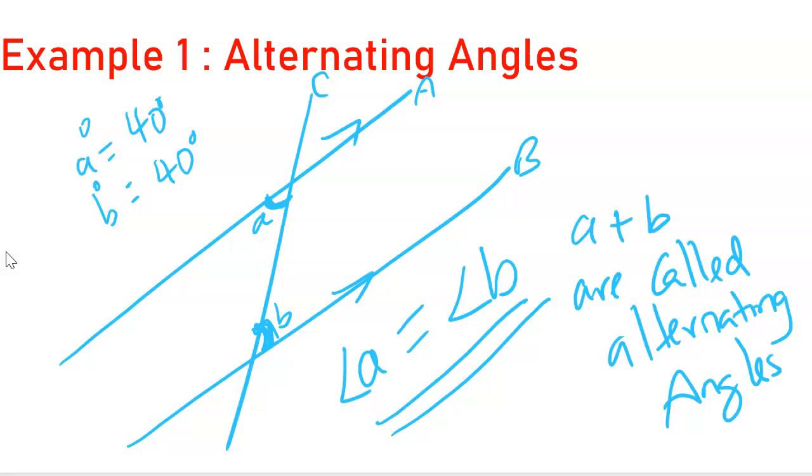In the two parallel lines given here, A and B, with the transversal line C, the angles A and B are not the only alternating angles. If you look at this angle here, say C, that angle is also alternating to this angle. It's alternating to D here.